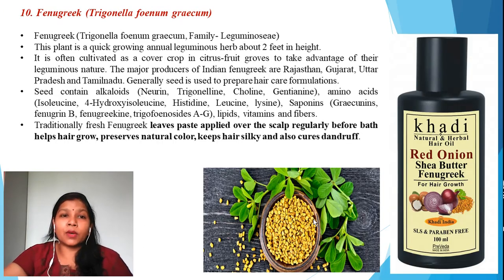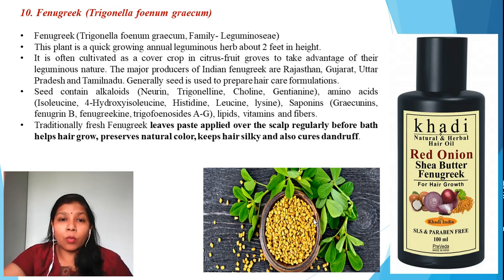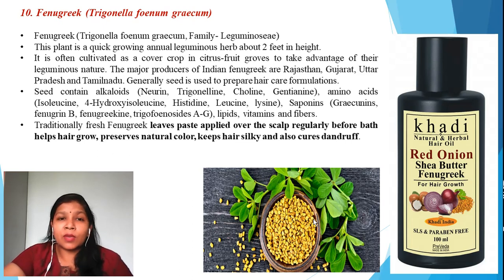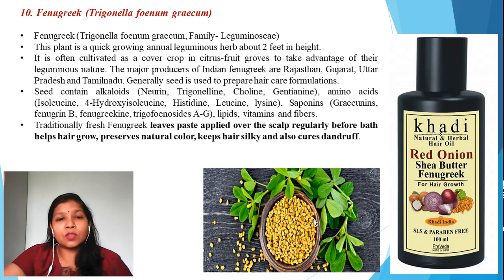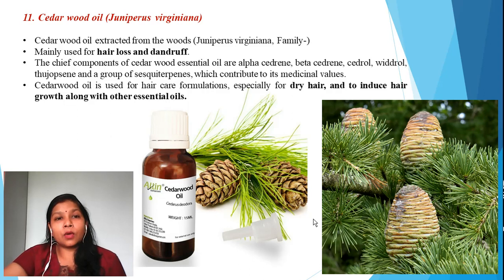The tenth ingredient is fenugreek, belonging to the family Leguminosae. The botanical name is Trigonella foenum-graecum. Fenugreek is a leguminous herb that grows up to two feet in height. It is a cover crop in citrus fruit groves — the legume roots control nitrogen in the soil. It is mainly cultivated in Rajasthan, Gujarat, Uttar Pradesh, and Tamil Nadu. The alkaloids present in fenugreek are responsible for hair care benefits: applying a paste of the leaves promotes hair growth, preserves natural color, maintains silkiness, and controls dandruff.